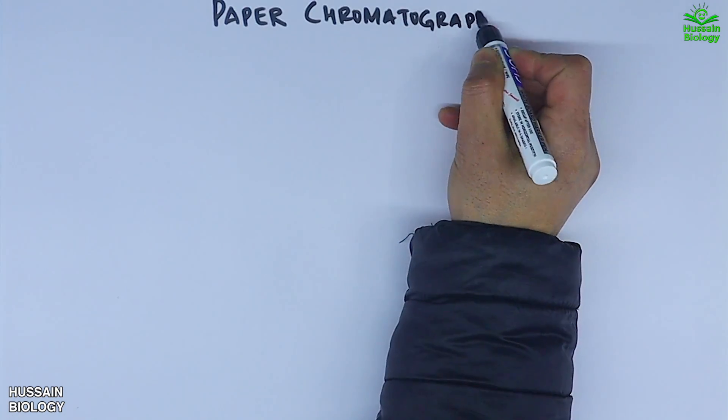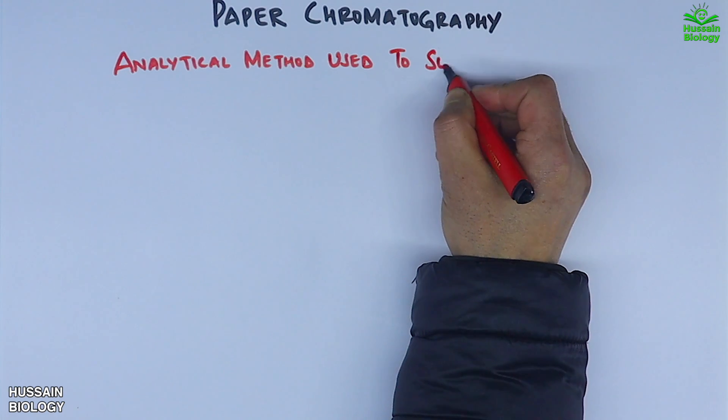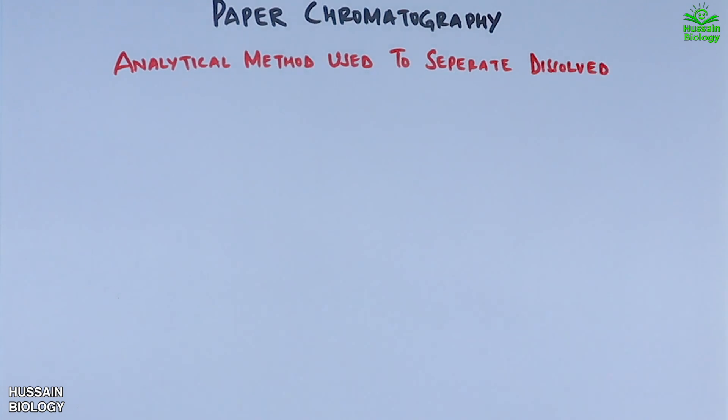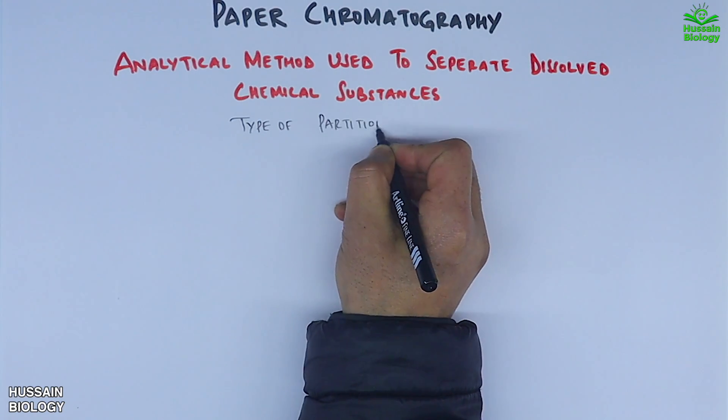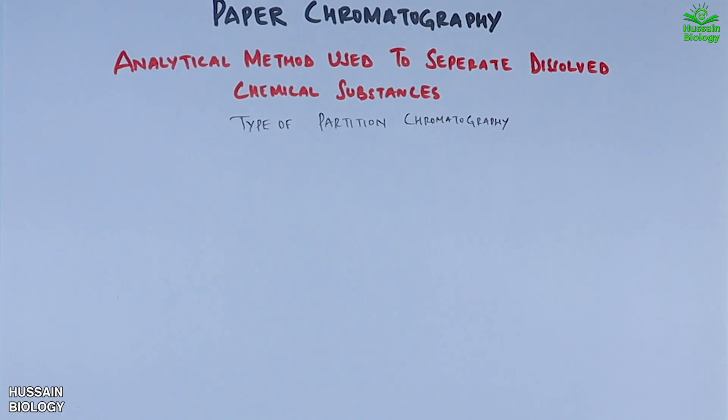In the previous video we discussed about chromatography and its classification. Now in this video we'll be discussing about paper chromatography. It is an analytical method used to separate dissolved chemical substances. Paper chromatography is a type of partition chromatography using a planar technique.